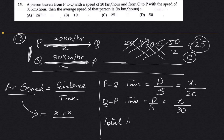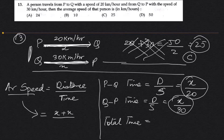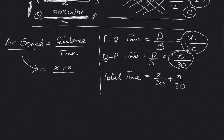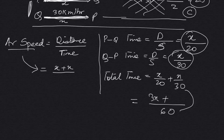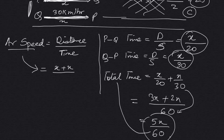Total time will be X by 20 plus X by 30. Taking LCM of 60: that is 3X plus 2X over 60, which equals 5X by 60.